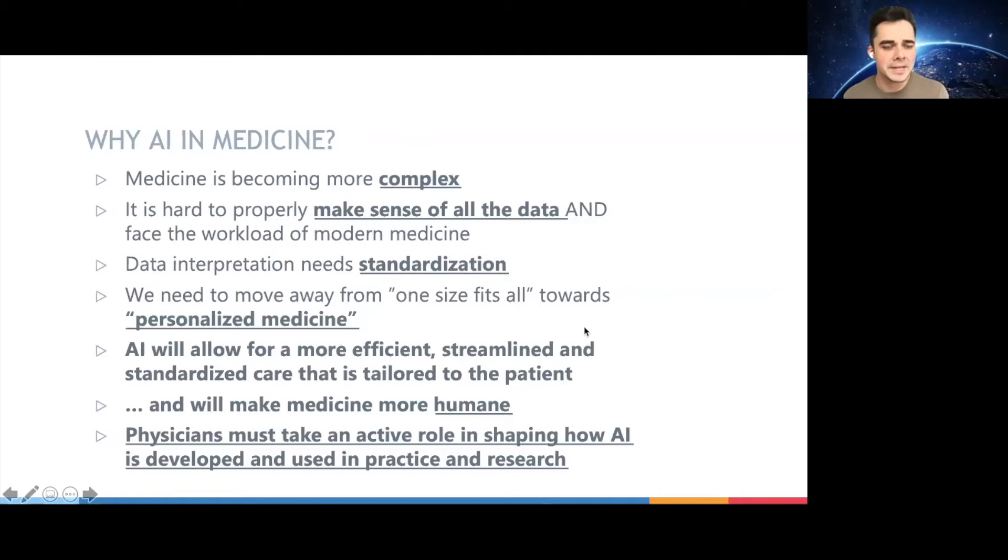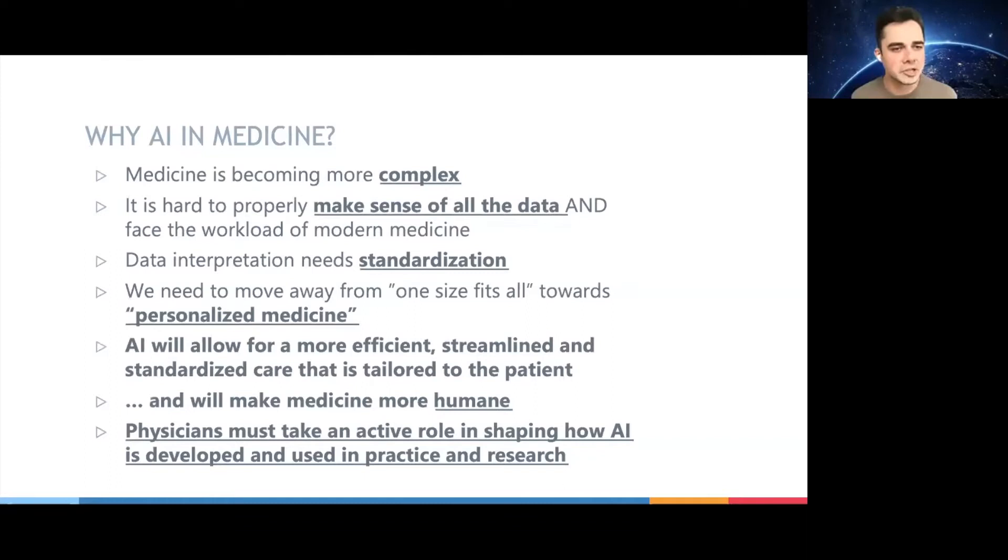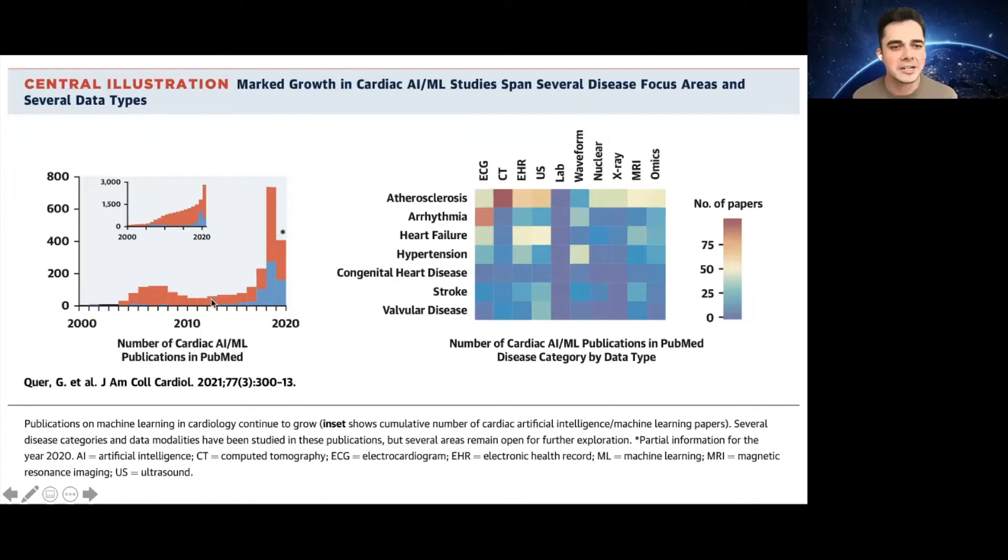And I think that artificial intelligence will allow for more efficient, streamlined, and standardized patient care tailored to the patient, and ultimately will make medicine more humane. I also think that physicians must take an active role in shaping how AI is developed and used in practice and research, because otherwise this will belong to tech companies, and they might implement in a very different way that's not patient or clinical practice friendly. I want to also share with you this chart of the number of publications of AI and machine learning. Basically, you can follow the increase in the computational power and compare it to the amount of papers. And you can see it has a very strong correlation. We had an exponential growth in interest around AI and machine learning studies in cardiology. And you can see to the right a confusion matrix or a heat map that shows what modalities are analyzed for AI and what pathologies. And I want to draw your attention that there is almost nothing in interventional cardiology, and it mainly focuses on ECGs, CTs, EHR data, or ultrasound results.